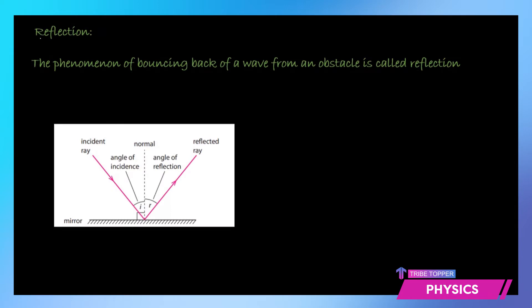What do we mean by reflection? This is simply the bouncing back of a wave from an obstacle. That is called reflection. Like you throw a ball on the wall, it just bounces back — that is reflection.